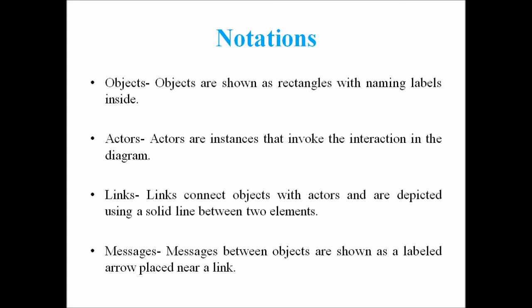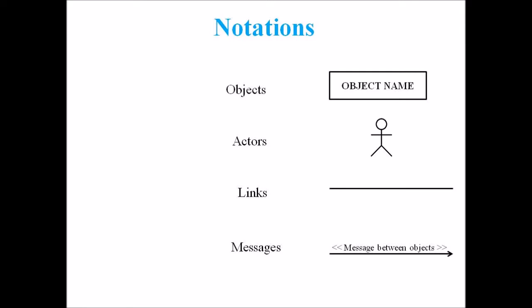When we come to the term messages, it is a communication between the objects which carries the information and includes a sequence number so that the activity may take place. It is represented by a labeled arrow which is placed near a link. The messages are sent from the sender to the receiver and the direction must be navigable in that particular direction. The receiver must understand the message.